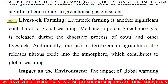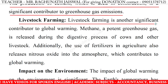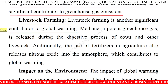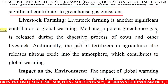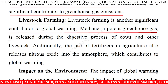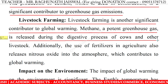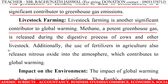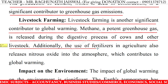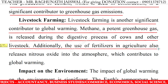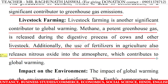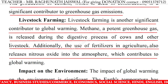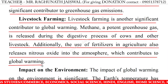Livestock farming. Livestock farming is another significant contributor to global warming. Methane, a potent greenhouse gas, is released during the digestive process of cows and other livestock. Additionally, the use of fertilizers in agriculture also releases nitrous oxide into the atmosphere, which contributes to global warming.